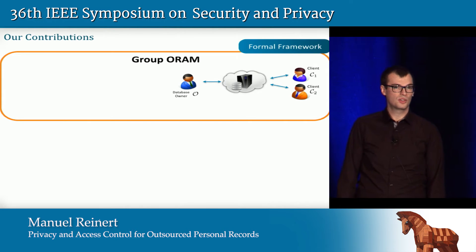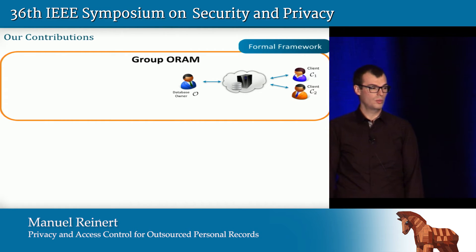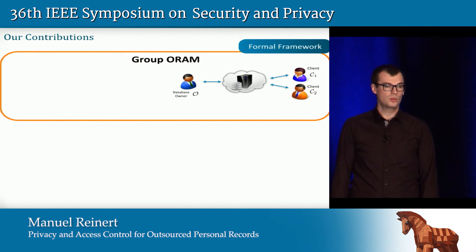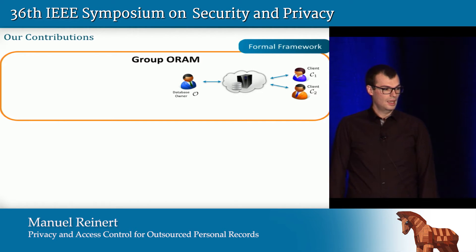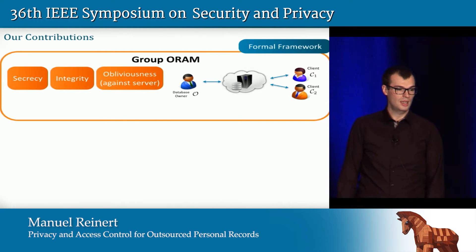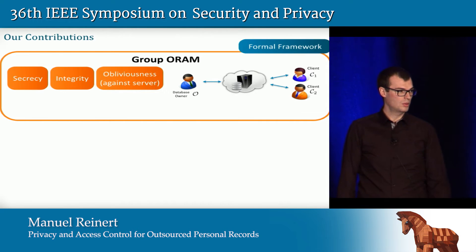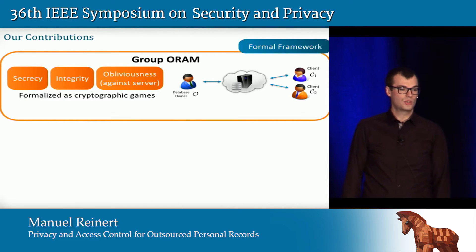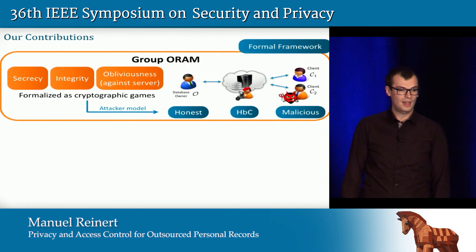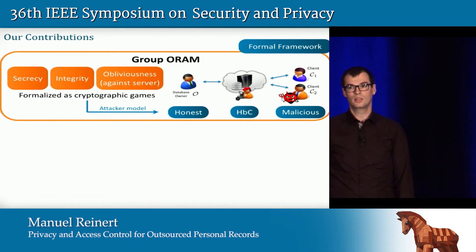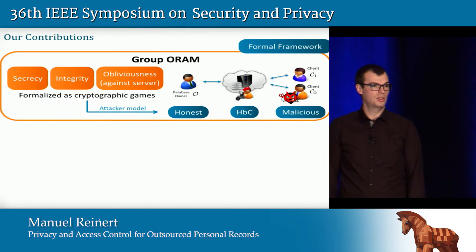Our contributions are, first of all, a formal framework in which we define the notion of group oblivious RAM, or multi-client oblivious RAM. We define several security and privacy properties, three of which I focus on today: secrecy, integrity, and obliviousness against the server. We formalize them as cryptographic games in a unified attacker model where the database owner is honest, the server is honest but curious, and the clients might be potentially malicious.